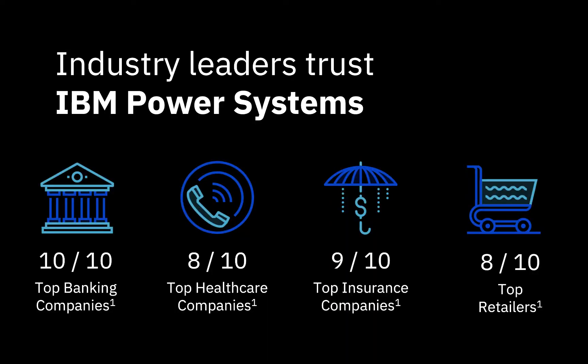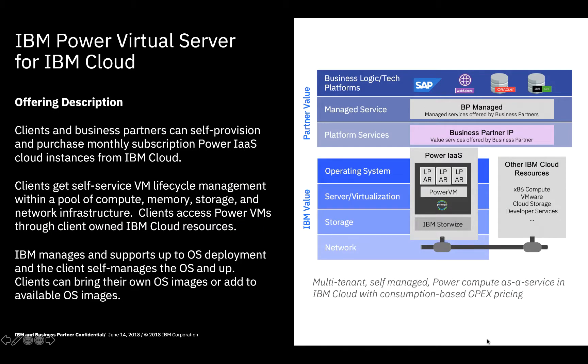IBM Power systems are so secure, reliable, and enterprise-grade that 10 out of the 10 top banks, 8 out of the 10 top healthcare providers, 9 out of the top 10 insurance providers, and 8 out of the top 10 retail companies trust IBM Power systems to run their most critical and data-intensive workloads. IBM has brought all of these features Power9 has to offer to the IBM Cloud with AIX and IBM i available today.